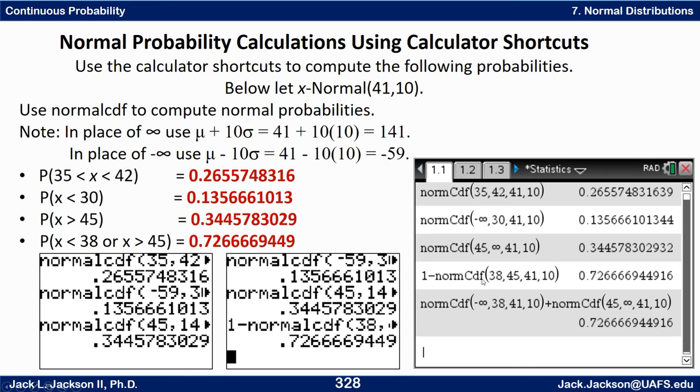This last one I did two ways. I did one minus the normalcdf of the between, the probability between the two, and then I did each one of these two separately using negative infinity and infinity and then add those up. I could have done the 84 the same way, just again used negative 59 for negative infinity and 141 here for infinity. To the limits of our calculator these would all work out the same thing and there we go.